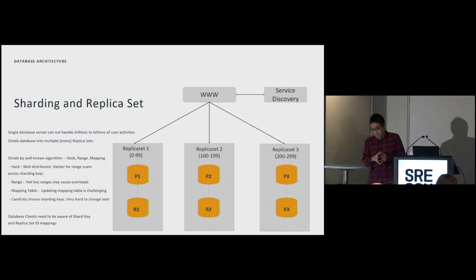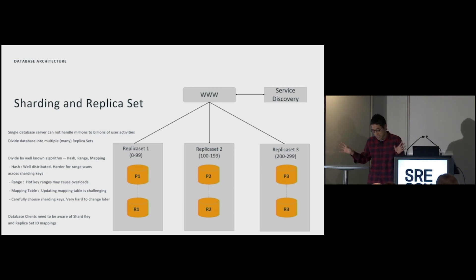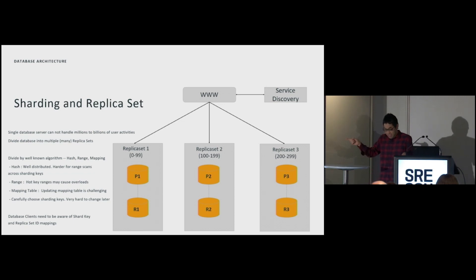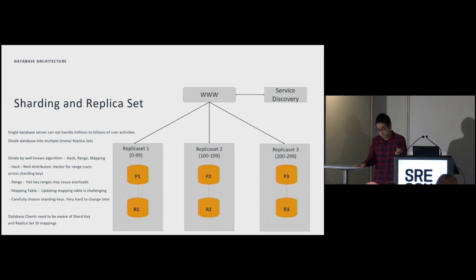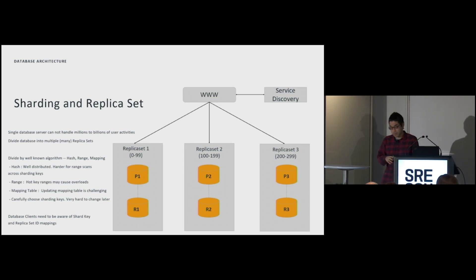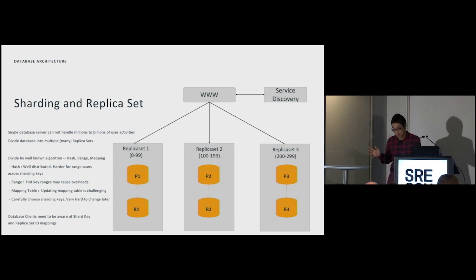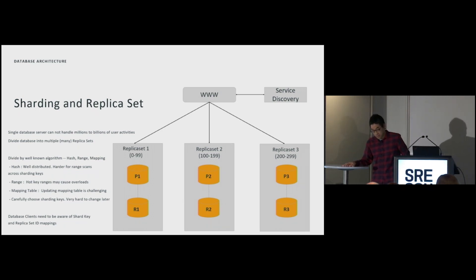For sharding and replicasets: Meta has billions of Facebook users and a single database cannot host all of them, so we split databases — this is called sharding. Each shard, which we call a replicaset, has a single primary and multiple replicas. In this example, we split by user IDs: user IDs 0 to 99 go to replicaset 1, and 100 to 199 go to replicaset 2. Sharding can be done by well-known algorithms like hash, range, or mapping tables. At Meta, we use hash because it distributes data well.